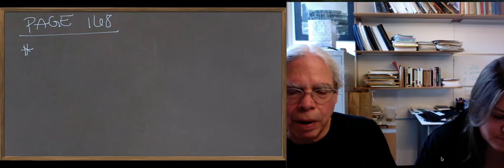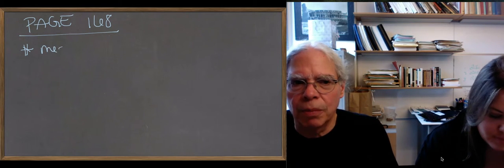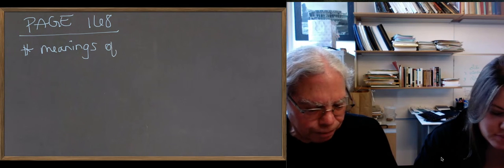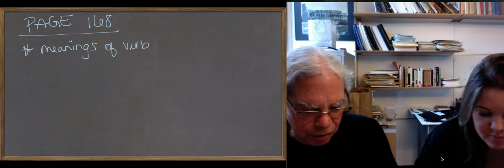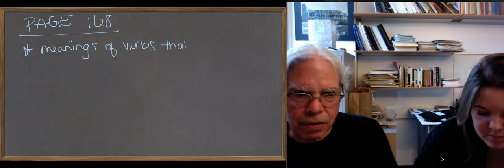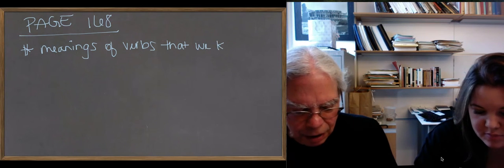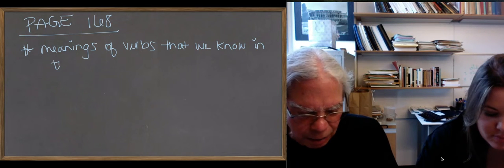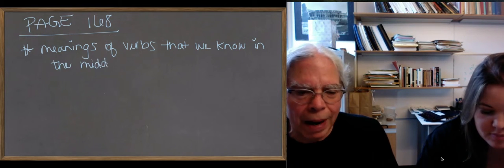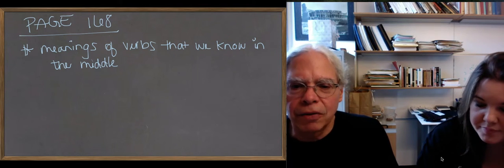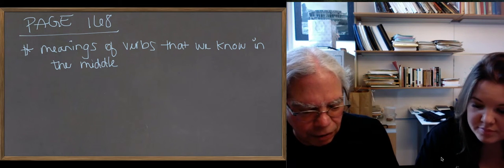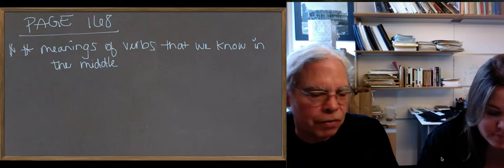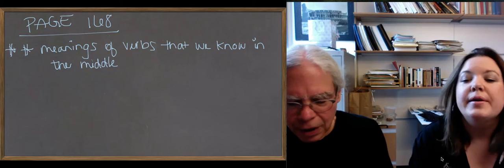So pauo, to stop, in the active means to stop somebody else. In the middle, it means to cease doing something. Or thuo means to sacrifice an animal in the active, and it means to have it made on your behalf in the middle, stuff like that. So there's a lovely list there, and it's the best way to get a feeling for what the middle is in contrast to the active.